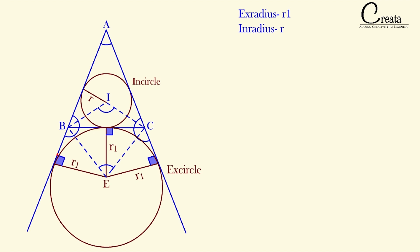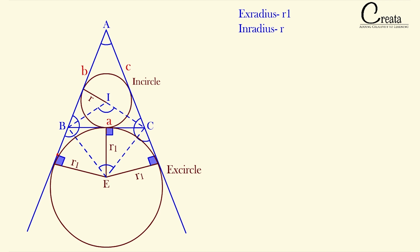Let's denote the three sides of the triangle as a, b and c. BC is a, AB is b, and AC is c. In the previous lecture, we have seen that the in-radius of the in-circle is equal to the area of triangle ABC upon the semi-perimeter of triangle ABC.